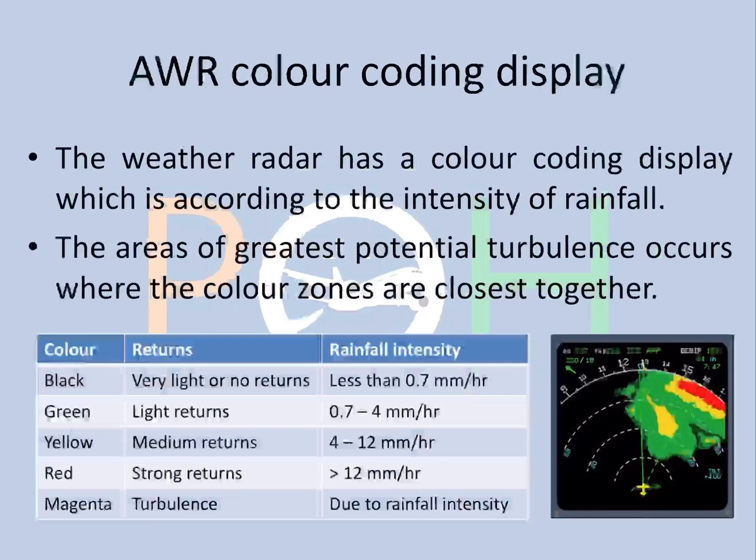The weather radar has a color-coded display according to the intensity of rainfall. The areas of greatest potential turbulence occur where the color zones are closest together. Black is very light or no returns, green is light returns, yellow is medium returns, red is strong returns, and magenta indicates turbulence due to the rainfall itself. If the colors are very close together, you can expect magenta-level turbulence.